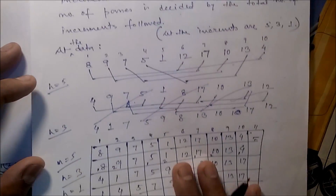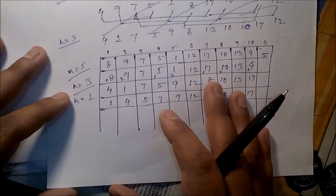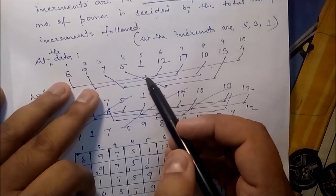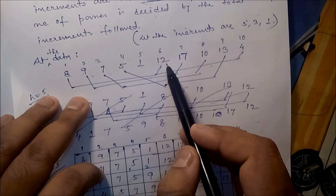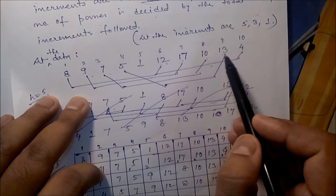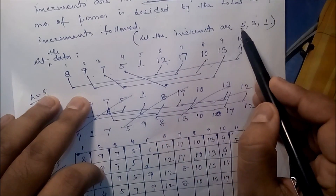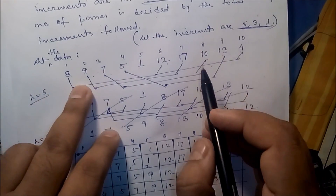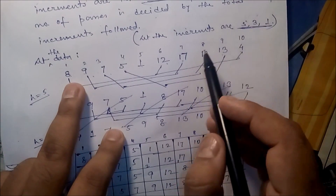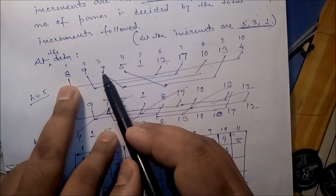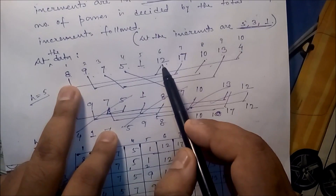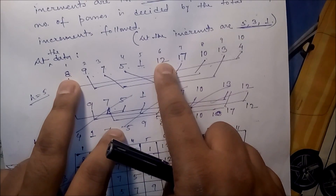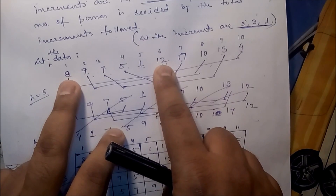Now take one example. Suppose the data is: 8, 9, 7, 5, 1, 2, 12, 17, 10, 13, 4. We have to set the increments as 5, 3, 1. For the first pass with h equal to 5, we compare elements that are 5 positions apart.